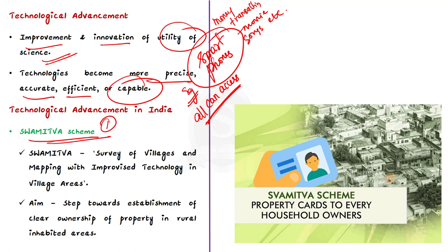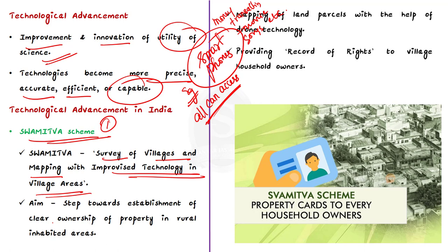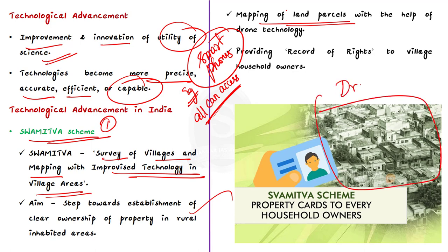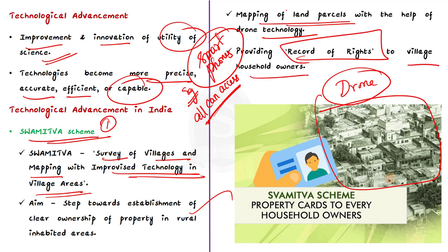Now let's see the technological advancement in India as mentioned in the news article and how it is creating inclusiveness. First, let's talk about the Swamitva scheme. Swamitva means Survey of Villages and Mapping with Improvised Technology in Village Areas. This scheme is a reformative step towards establishment of clear ownership of property in rural inhabited areas. It is done by mapping of land parcels with the help of drone technology and by providing a record of rights to village household owners — and with the use of this technology, inclusiveness is portrayed.